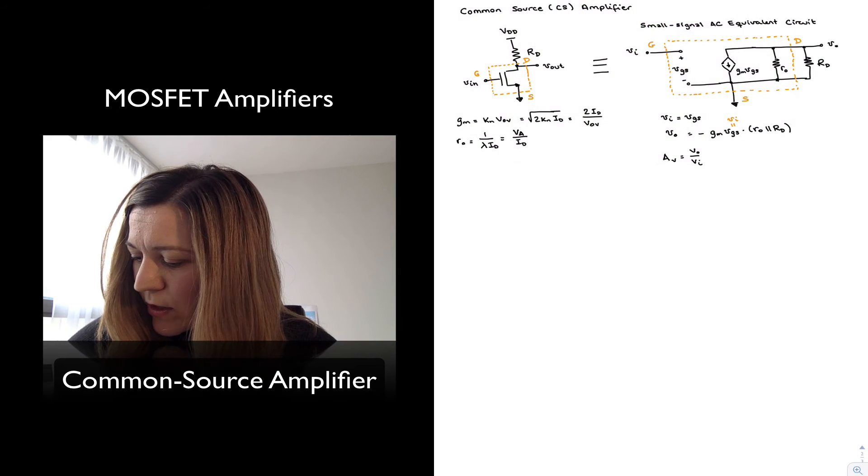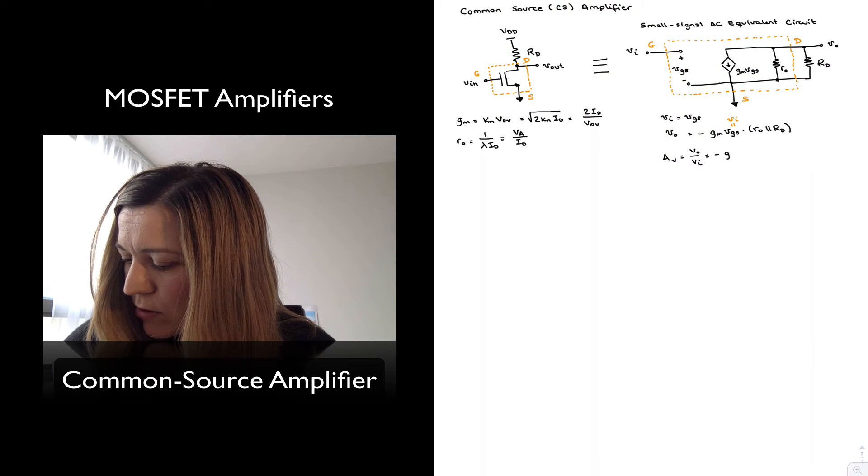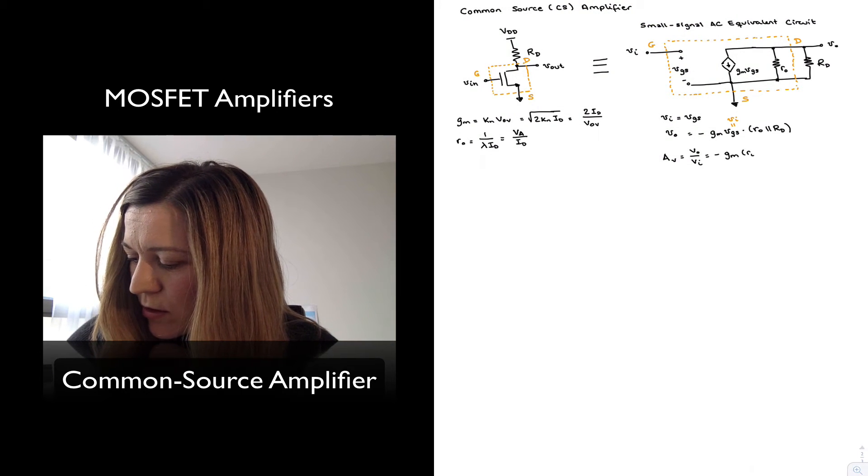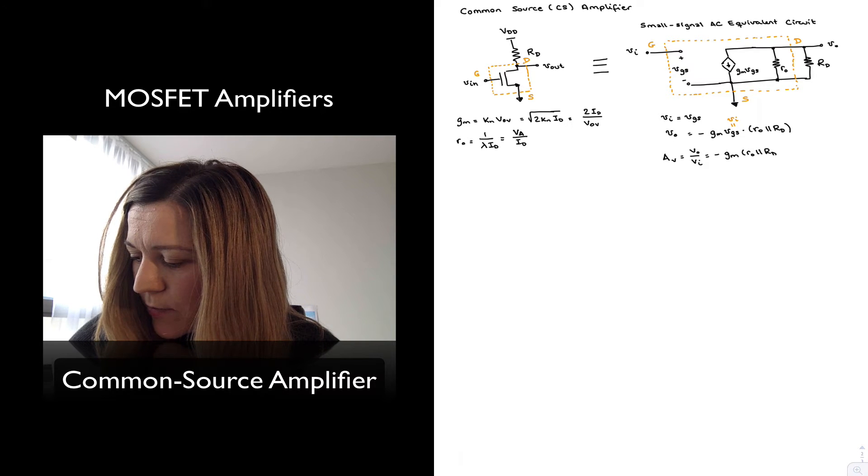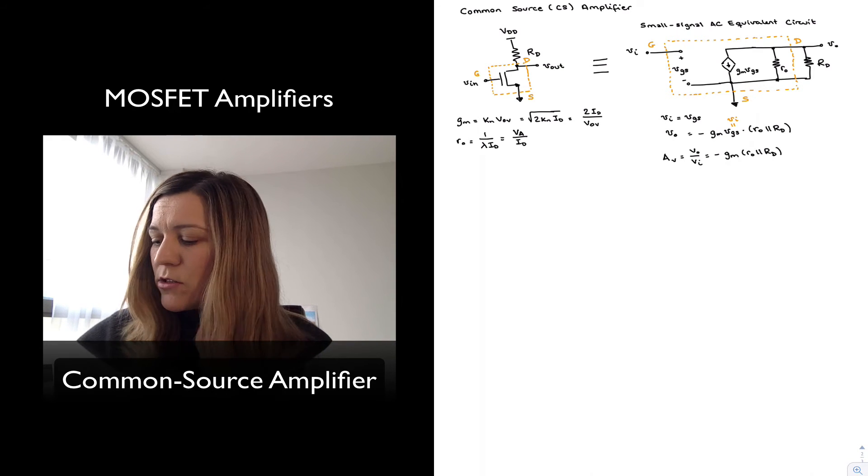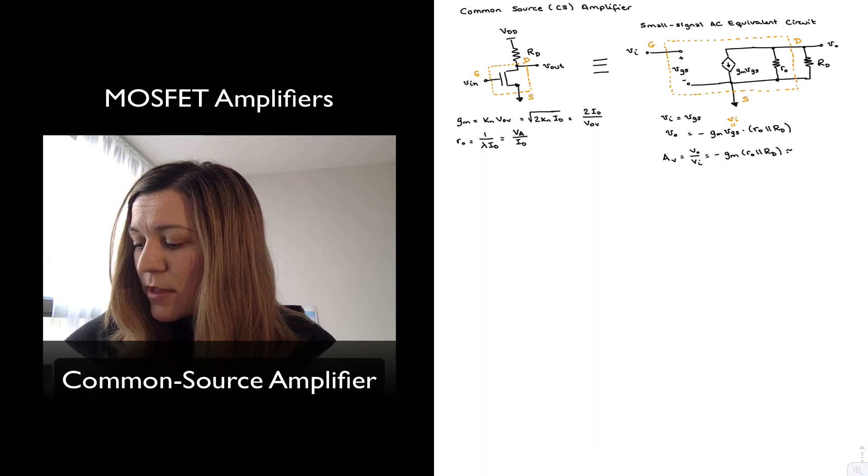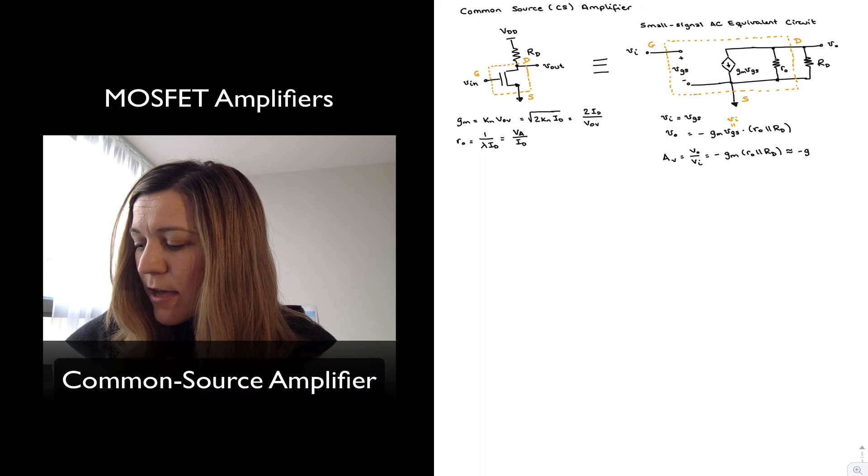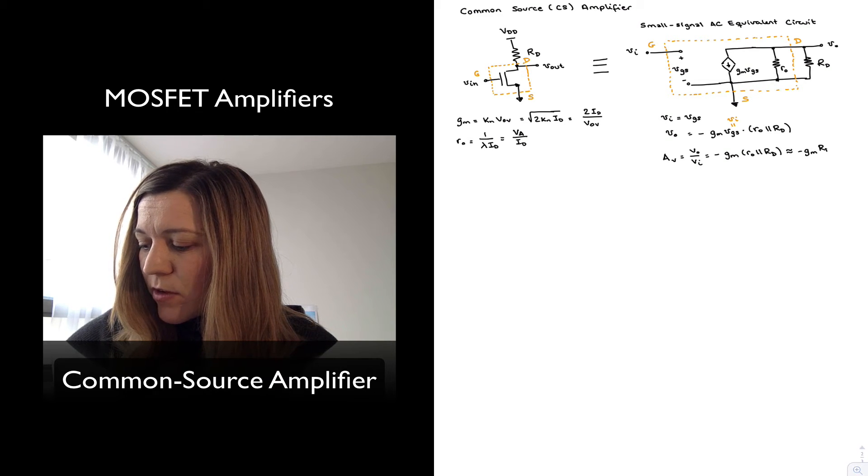I can solve from that last equation and it's simply equal to negative GM times little r_o in parallel with RD. Most often, little r_o is going to be much larger than RD. And so, I'm going to be able to approximate this as negative GM times RD.